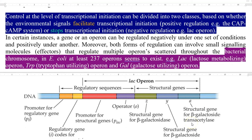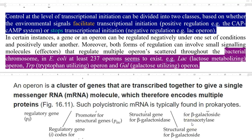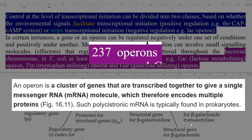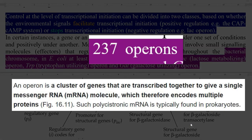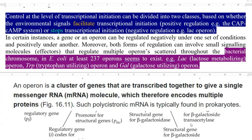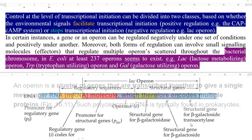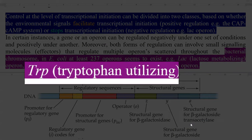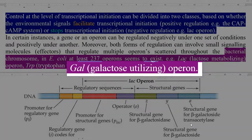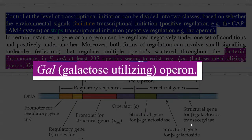As we have already seen, a gene or an operon can be regulated negatively under one set of conditions and positively under another. Both forms of regulation can involve small signaling molecules, referred to as effector molecules, that regulate multiple operons scattered throughout the bacterial chromosomes. For instance, in E. coli, at least 237 operons seem to exist.